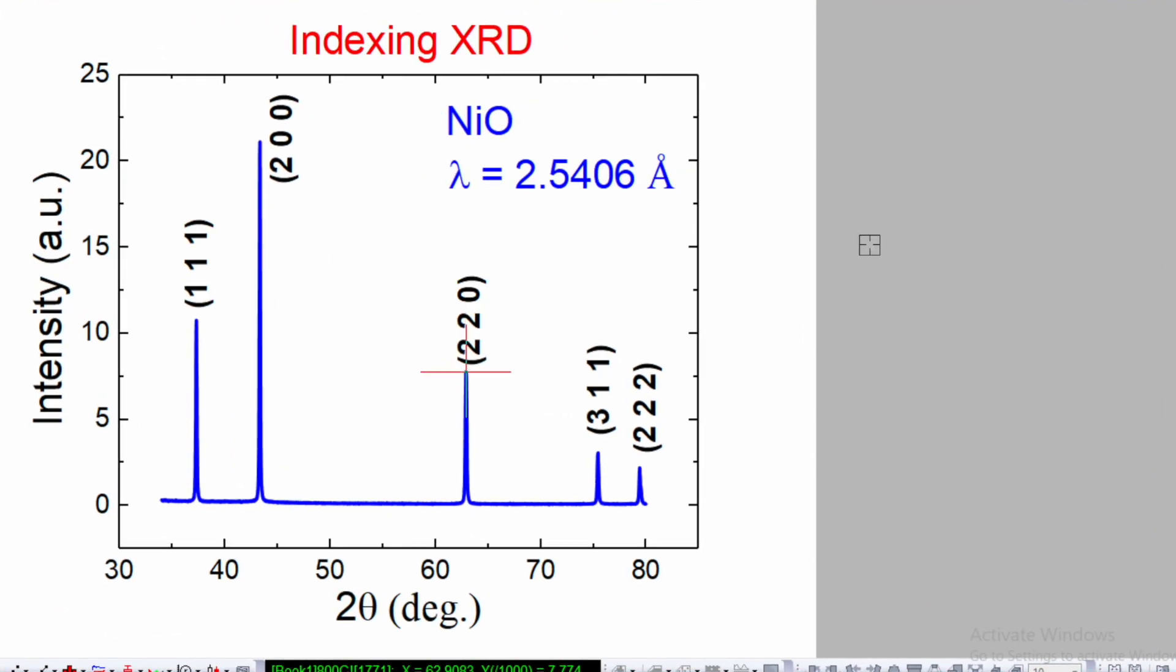If you have a CIF file and XRD diffractogram, just use the Vista software and create a simulated XRD diffractogram. From that you can get the hkl values, and that can help you to index your XRD diffractogram.